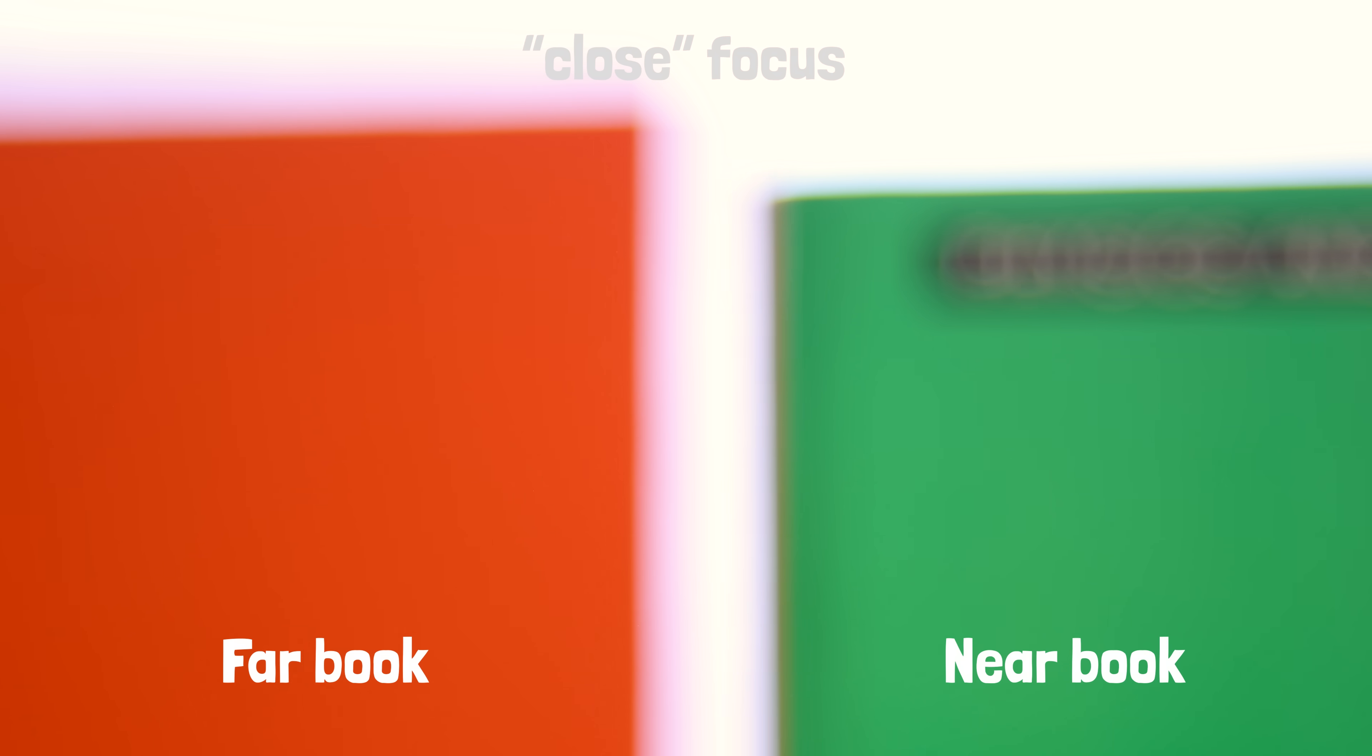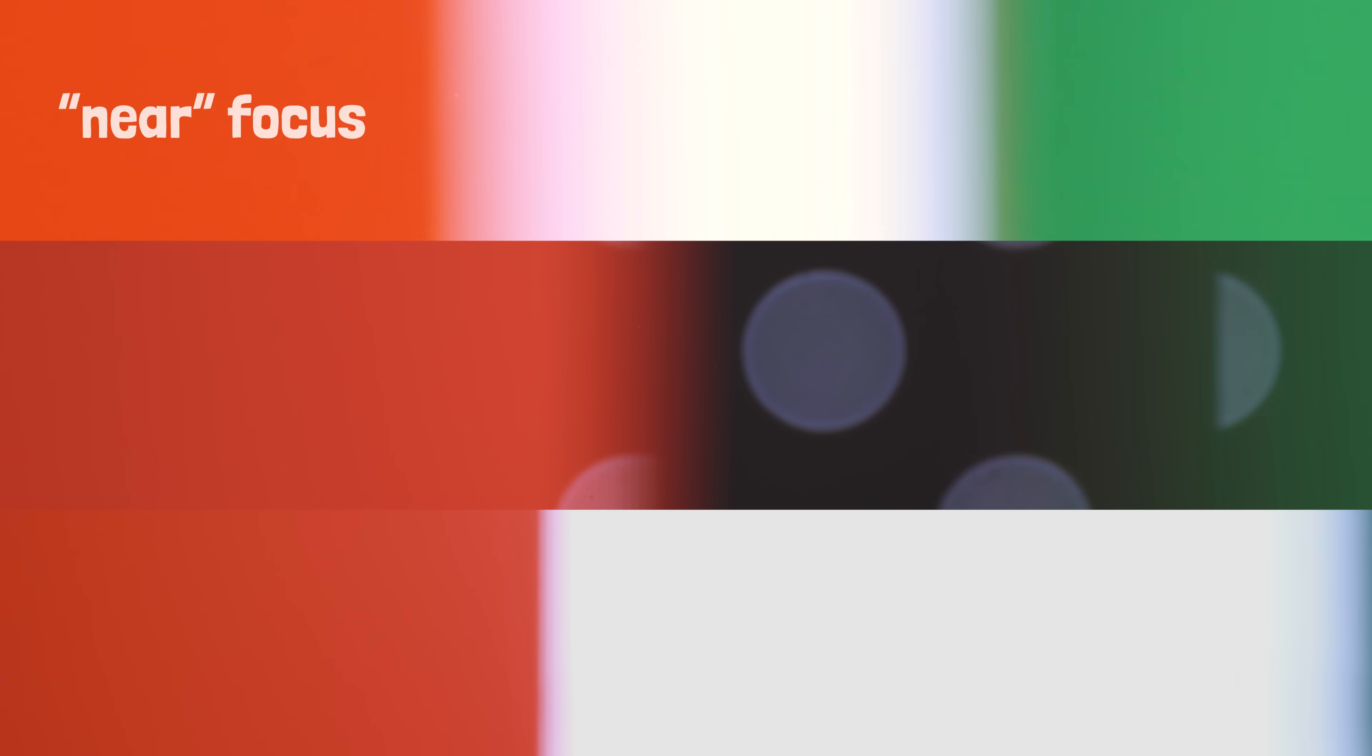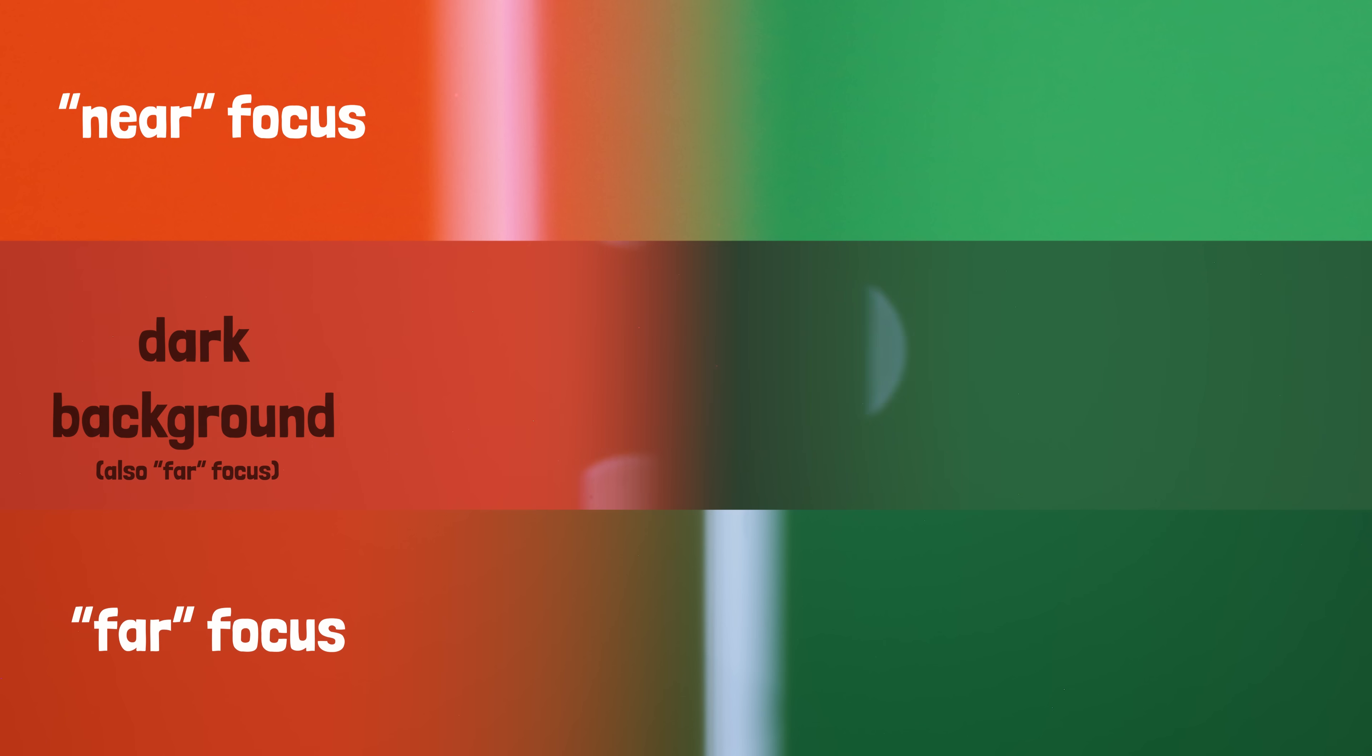The near object blisters, or grows, when you focus too near, while if you focus too far, then the far object blisters. Either way, the blister has the same color you'd see in that location if the background were dark. That light is always reaching the lens, it just normally gets overwhelmed by the bright bokeh of the bright background.